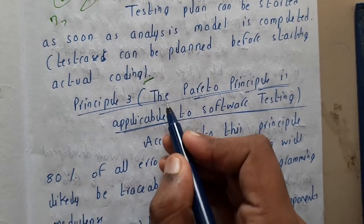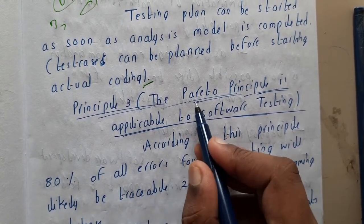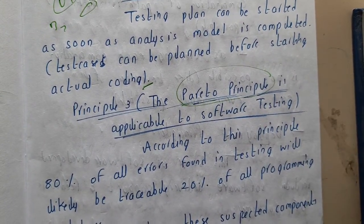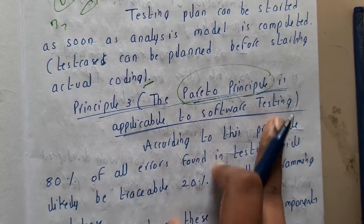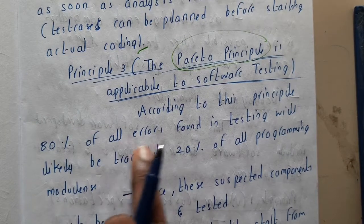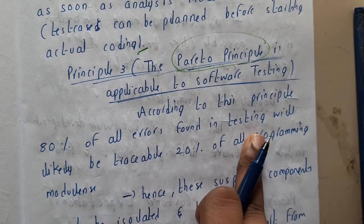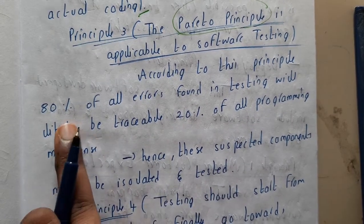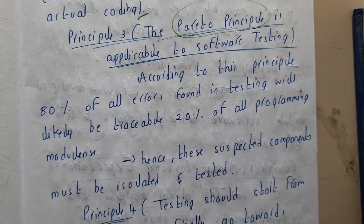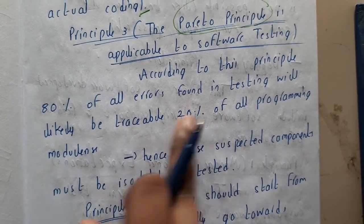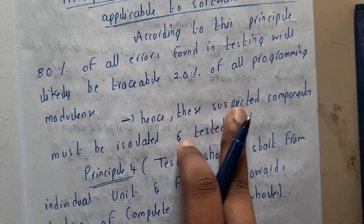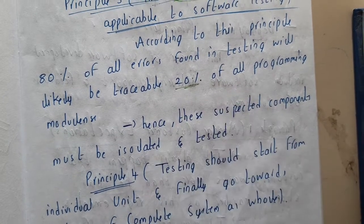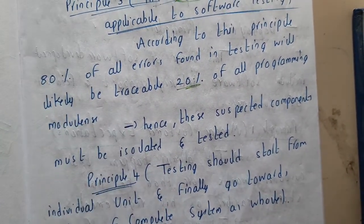The third principle is the Pareto Principle, which is applicable to software testing. According to the Pareto Principle, 80 percent of all errors found in testing will likely be traced to 20 percent of all programming modules. So if you identify and solve those 20 percent of components, the 80 percent of errors will also be resolved. Hence those suspected components must be isolated and tested.